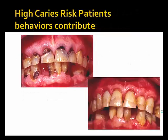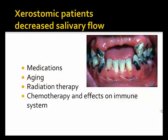For a high caries risk patient, whether behaviors contribute or for other reasons, using a resin-modified glass ionomer makes sense. The same is true for xerostomic patients, which have a high caries risk. We see decreased salivary flow due to medications, aging, radiation therapy, and chemotherapy, and its effects on the immune system can create a devastating occurrence of root caries for these patients.